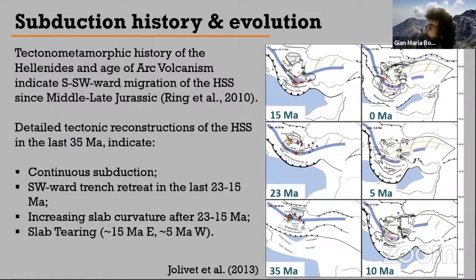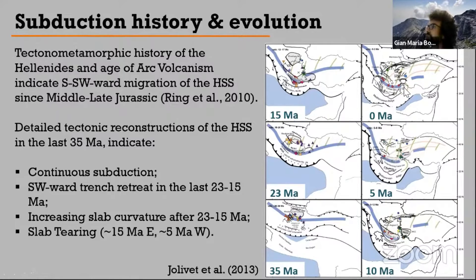At 10 Ma, the North Anatolian Fault appears in the system, but only at about 5 Ma does it start to interact with Aegean tectonics. At 5 Ma, a second discontinuity develops in the slab in the area of the Corinth Rift. This gives us the current situation: a subducting slab separated by two discontinuities representing the eastern and western terminations of the Hellenic subduction.